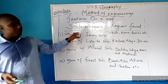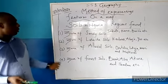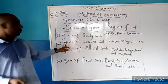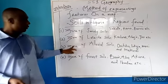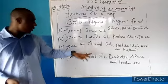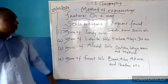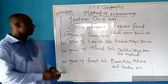Nigerian soil, for example, there are mainly four, which are: zone of sandy soil, zone of lateral soil, zone of alubia soil, and zone of forest soil. So these are the regions where they are found.